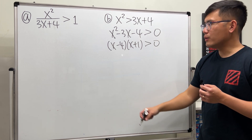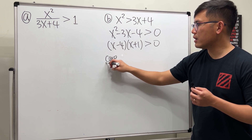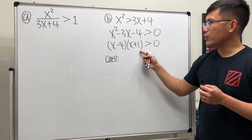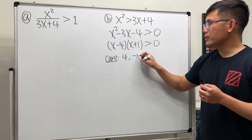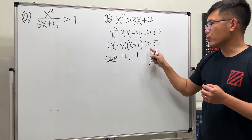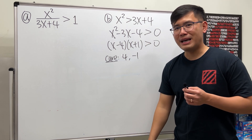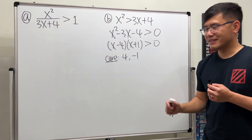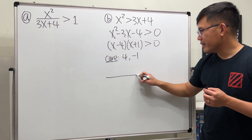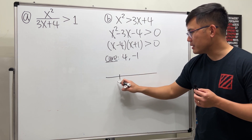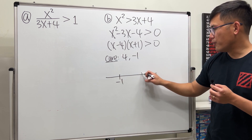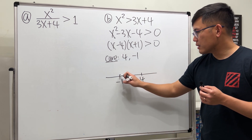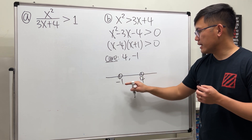We care about the numbers 4 and -1. We don't include them because it's strictly greater than — no equal sign. Draw the number line: put -1 to the left since it's smaller, then 4 to the right. Open circles on both because we are not including them.